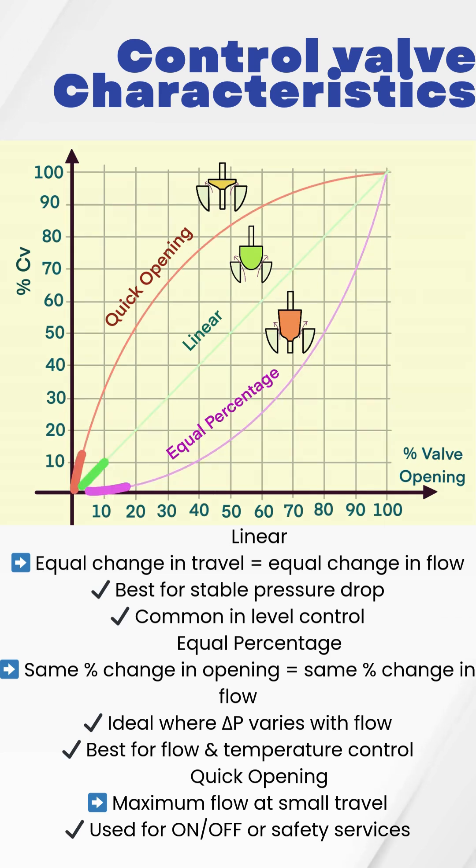Choose the wrong one? Your loop will hunt, oscillate, or respond sluggishly, no matter how good your PID tuning is.